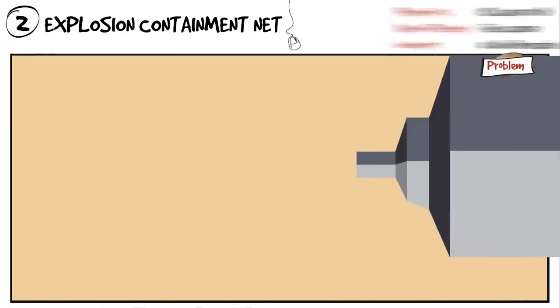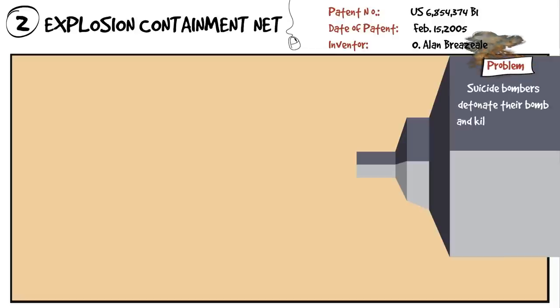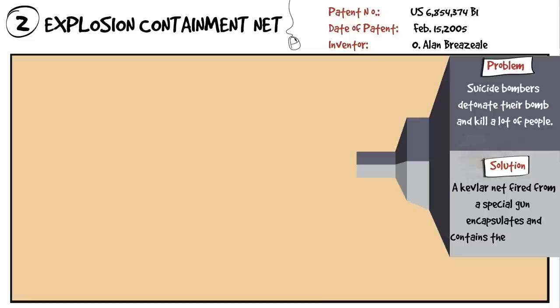Explosion containment net. Suicide bombers detonate their bomb and kill a lot of people. A Kevlar net fired from a special gun encapsulates and contains the bomb blast.